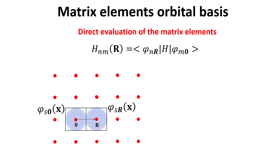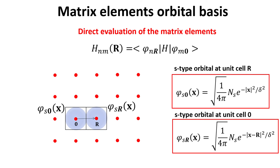We show s-type orbitals for the two highlighted unit cells. Once the crystal lattice and orbital states at each unit cell are established, the next step is to evaluate the matrix element. We write down two s-type wave functions located at the home unit cell and unit cell r. Note that the orbital wave functions shown are generic; the parameter delta describes the decay length of the wave function and sets its amplitude. For our purposes, only the orbital symmetries are important. The wave functions shown are spherically symmetric, as expected for s orbitals.